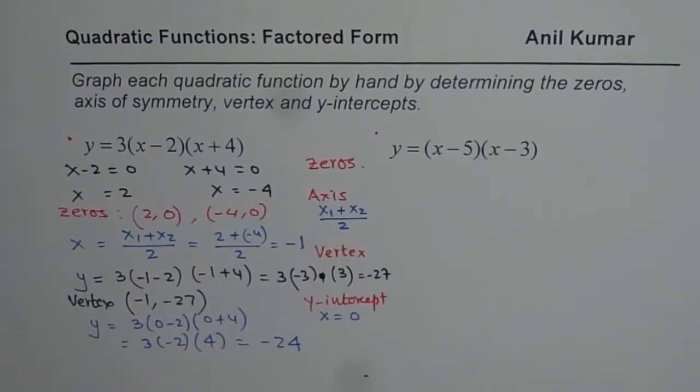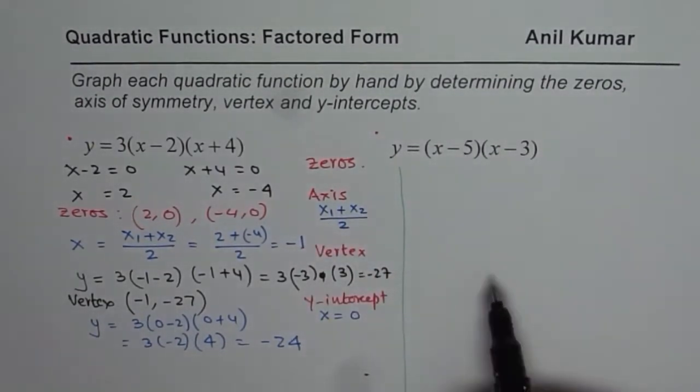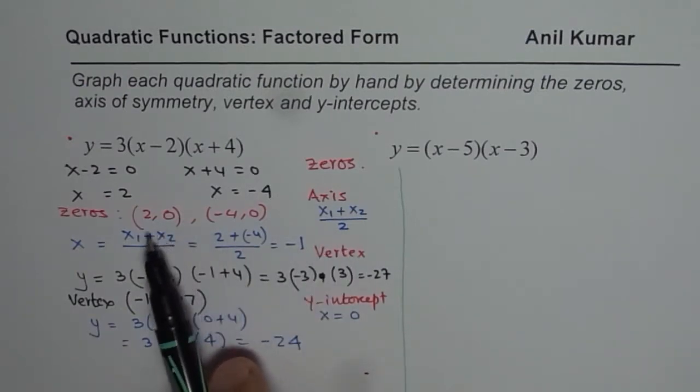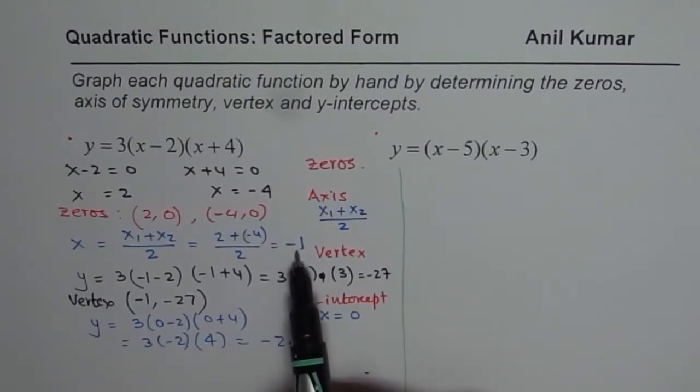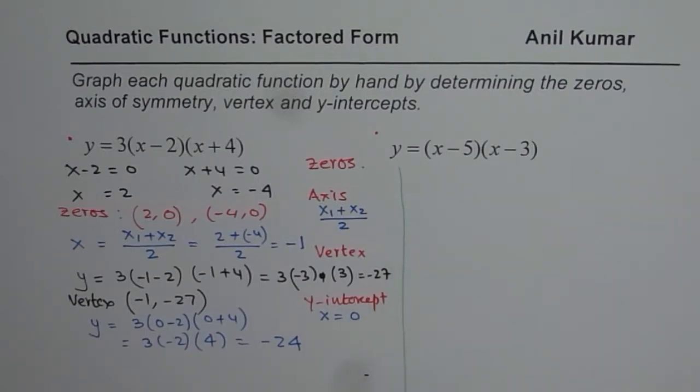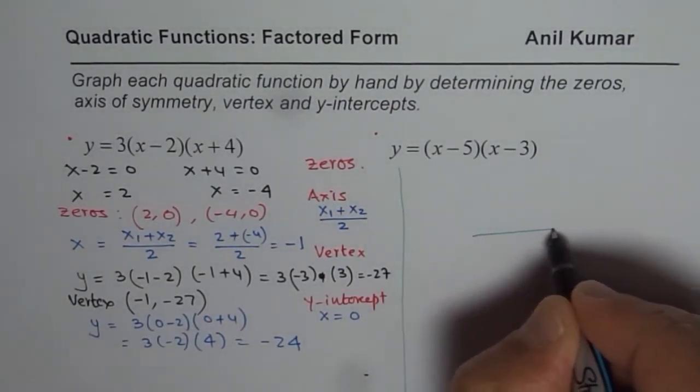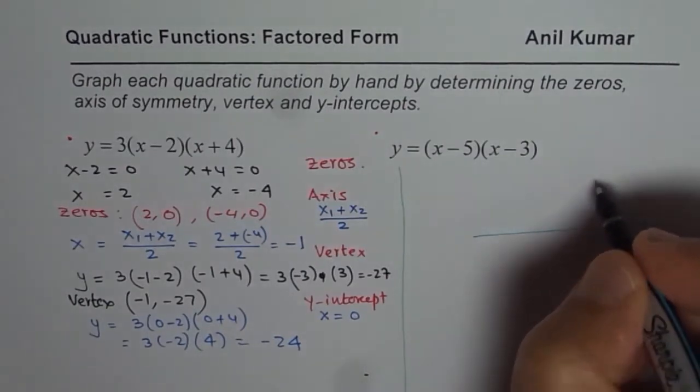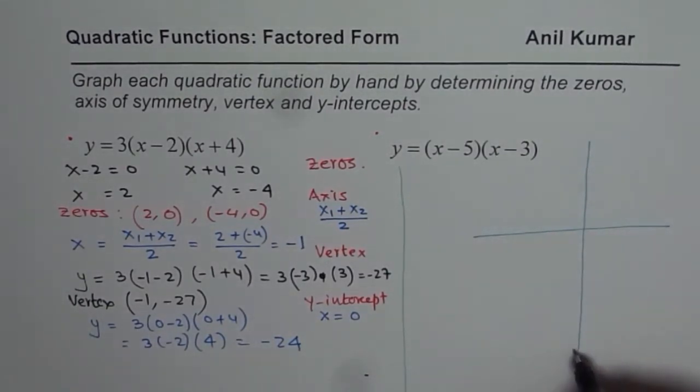Now we will sketch the graph on the right side. We will make a rough sketch. We know the two zeros are at 2 and minus 4, the axis is at minus 1, and the vertex and y-intercepts are known to us. Let us make coordinate axes. Since these values are more negative, we will make coordinate axes with more room on the negatives.